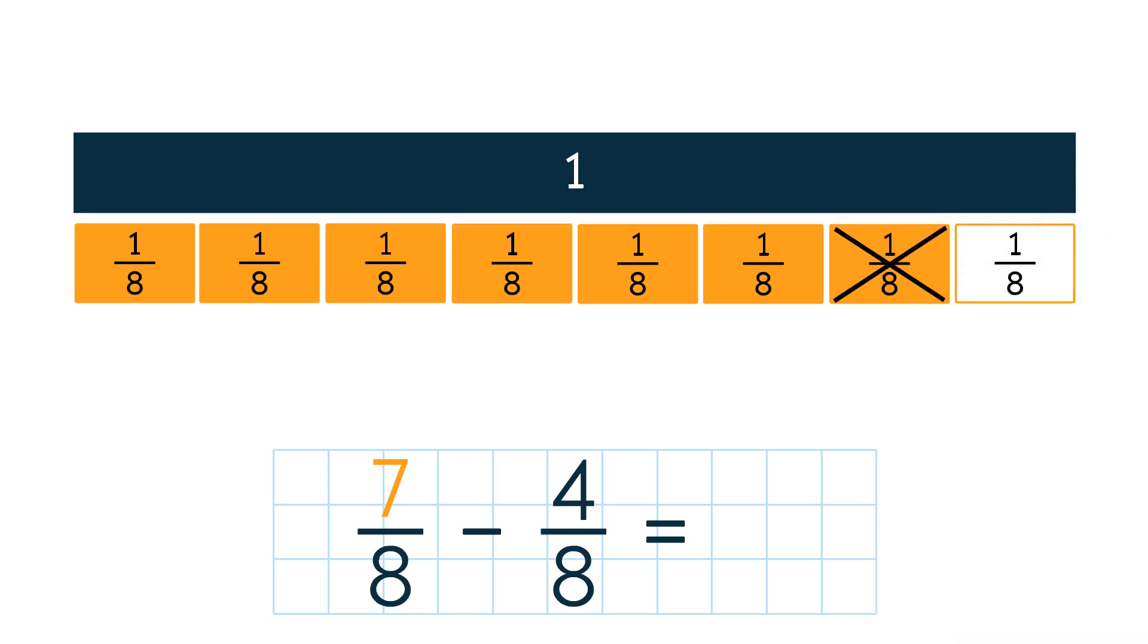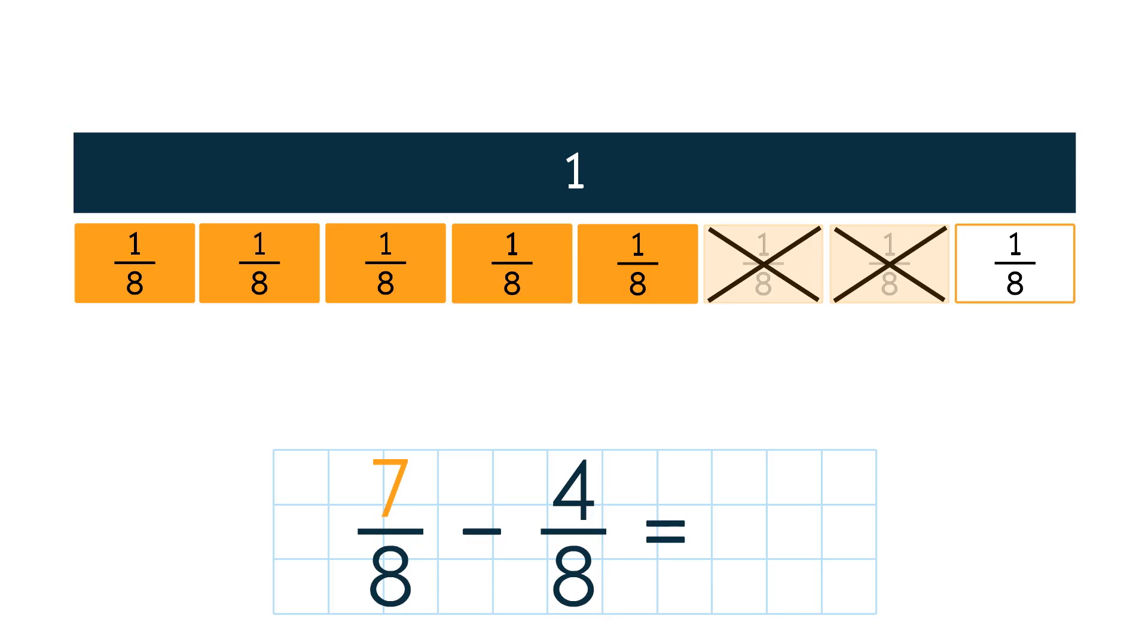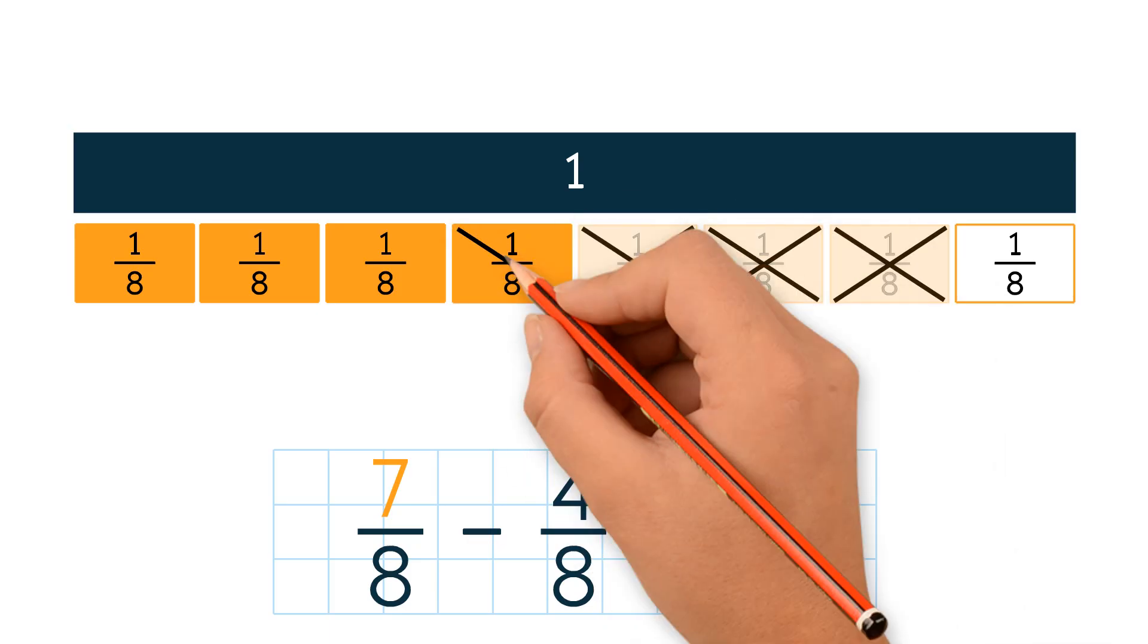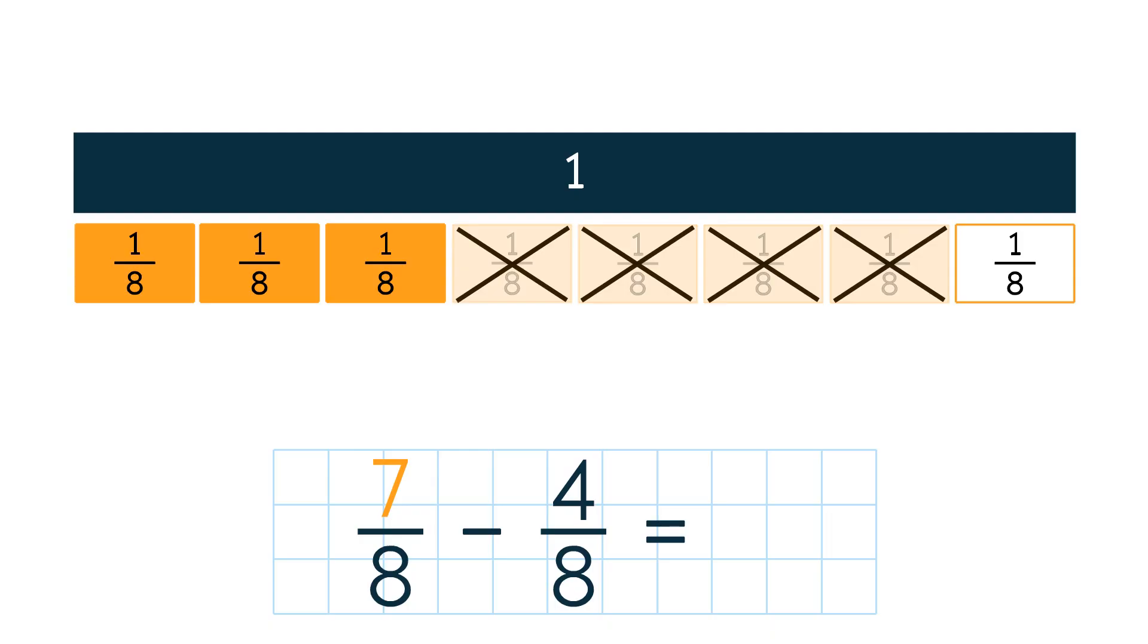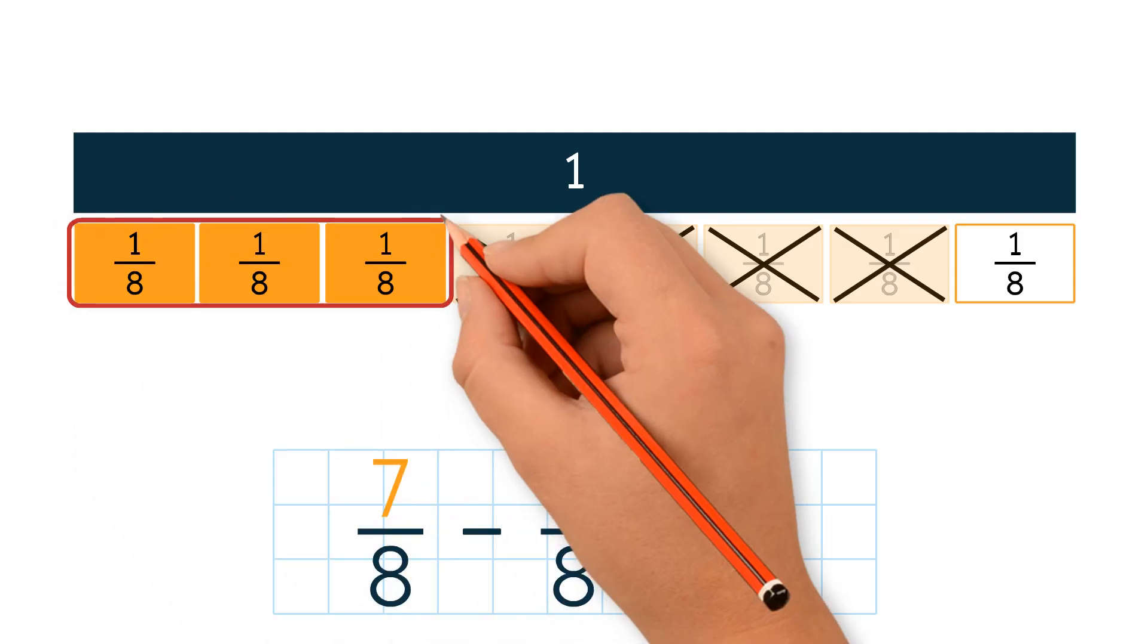We cross out 4 eighths. Now we count how many shaded eighths are left over. We have 3 eighths. So the answer is 3 eighths.